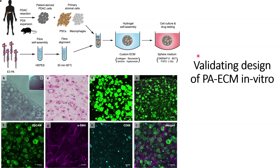In this video we will continue our discussion about the 3D biologically developed extracellular matrix composed of PA, that is peptide amphiphiles. This extracellular matrix is a combination of these components and it can be used to grow pancreatic cancer cells. However, in order to validate their design, they performed some experiments.